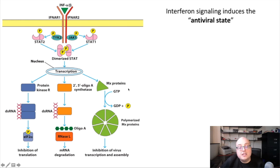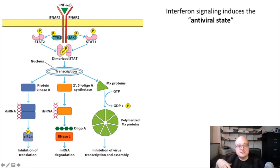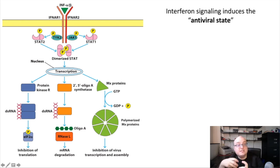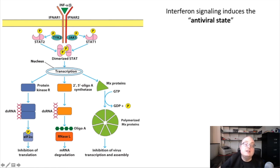Finally, there is a mechanism mediated by proteins called MX proteins, which are very good at inhibiting the assembly of the different parts of the virus — things like the capsid and the envelope. This addresses the final step of viral assembly: putting all the pieces together. So if we can block all three of these features of viral replication — translation of viral proteins, transcription of viral genes, and assembly of the different viral components — then basically the virus has no way of replicating itself and finishing its life cycle. This combination of biological activities is what we call the antiviral state.